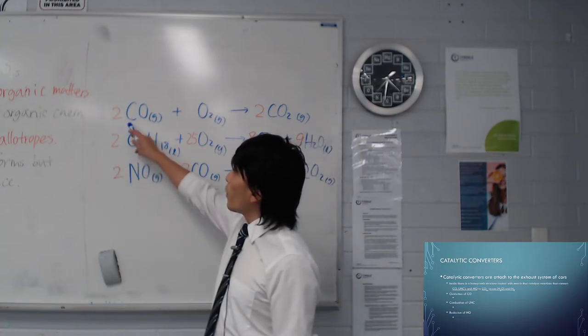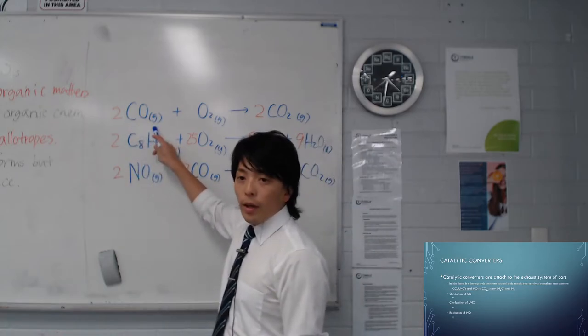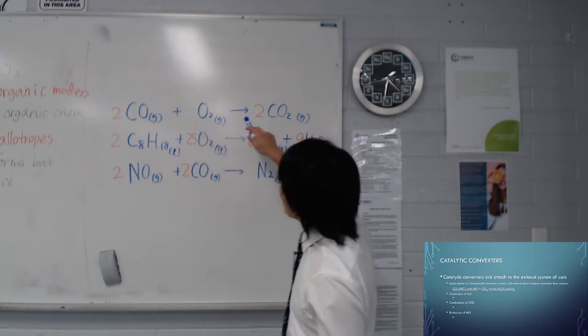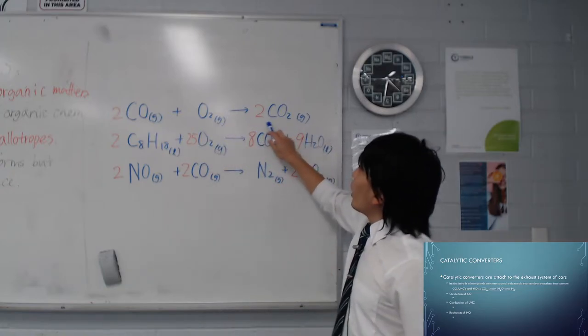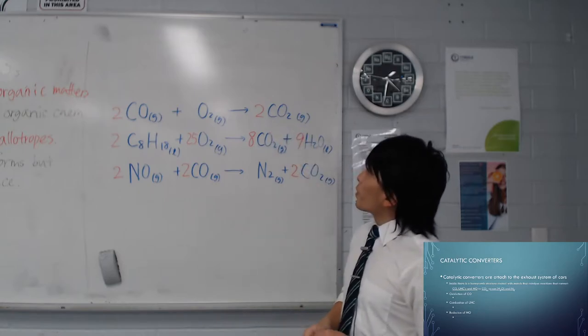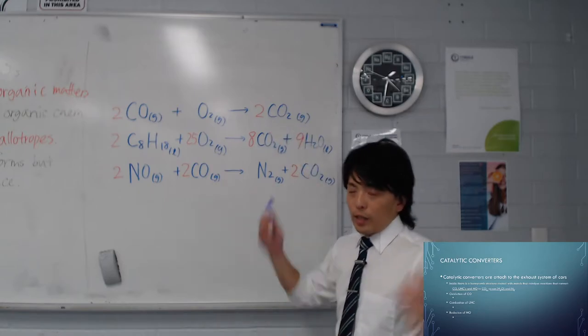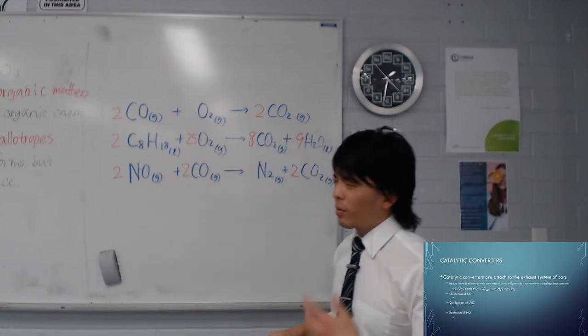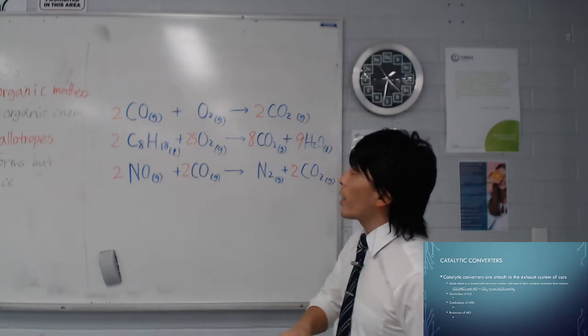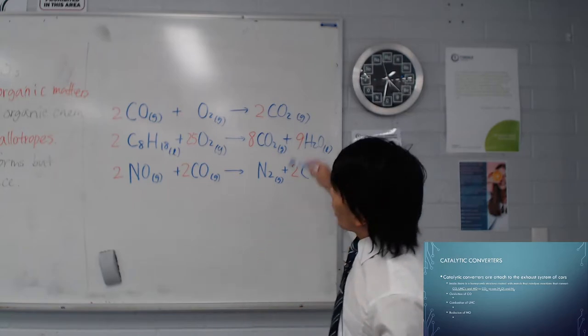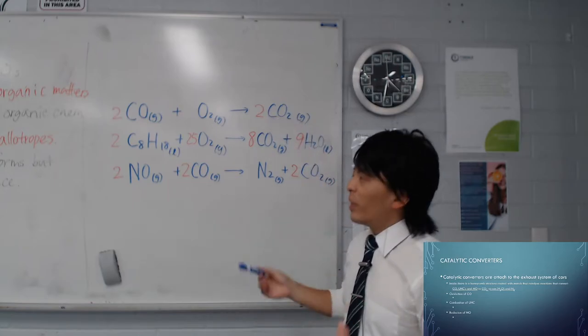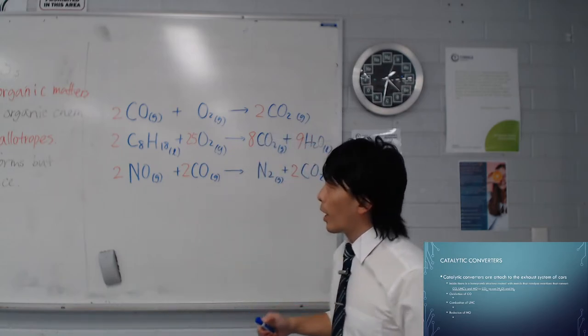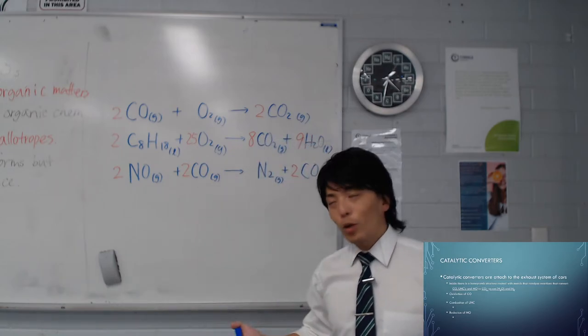Starting with carbon monoxide, it reacts with oxygen on the surface of the catalytic converters and that gets converted to CO2. CO is an invisible gas and silent killer. Carbon dioxide is less harmful, although it still contributes to global warming.